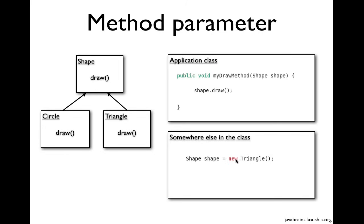So there has to be another piece of code in this class which has the initialization. Somewhere, somebody has to do shape equals new triangle, and then we need to call myDraw by passing this shape. So we are still tied to this new triangle - we are still not free from it. Somewhere else in the class, we need to have this new instantiation. No matter how many times you run this class, it's still going to draw a triangle because we have new triangle in place. If you have to change this, you will have to modify the class. We have insulated the method, but we've added the dependency in another part of the class.